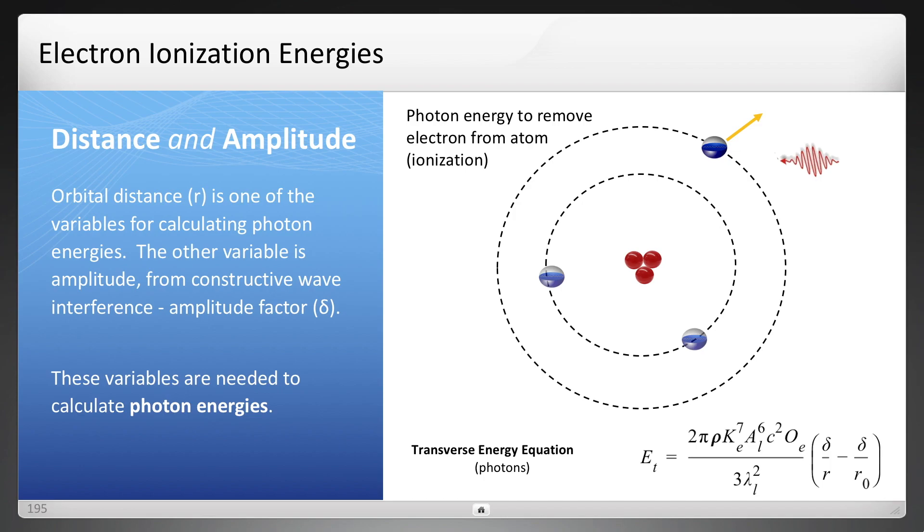And distance is one of those two variables. Well, actually there's three variables, but two are related to distance. And that third is constructive wave interference, simplified to a variable called amplitude factor. So that's the remaining variable that needs to be known to solve for photon energies.